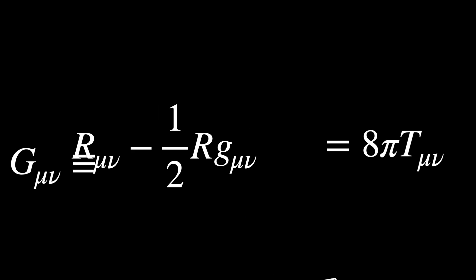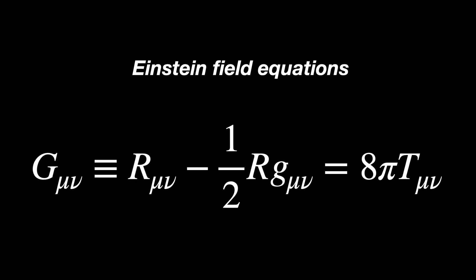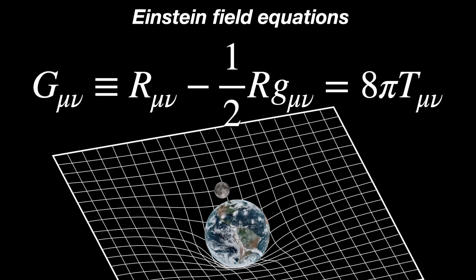It is called Einstein's equation or Einstein field equations since there is more than one, and this manifold is often described as the space-time around us.